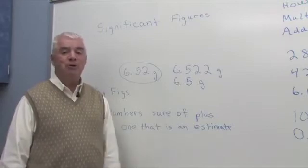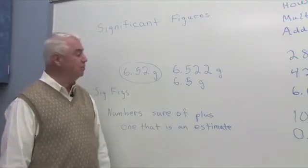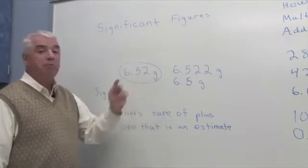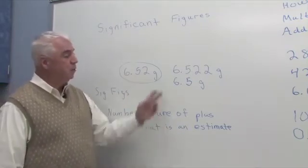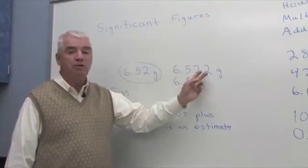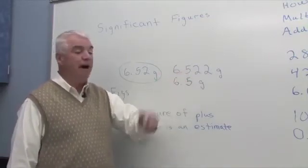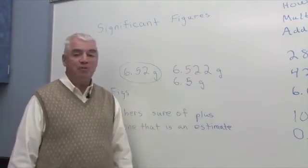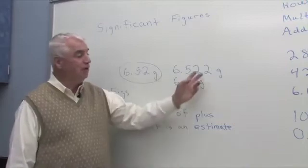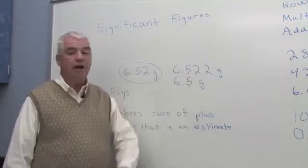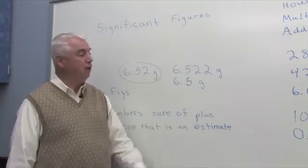The manufacturer calls it a centigram balance because it's accurate to the hundredth of a gram, and so these are meaningful numbers. Someone else using that same balance might record one more decimal place, 6.522. Well in this case the 2 is really not meaningful. The manufacturer has told us that only to the hundredth are significant figures.